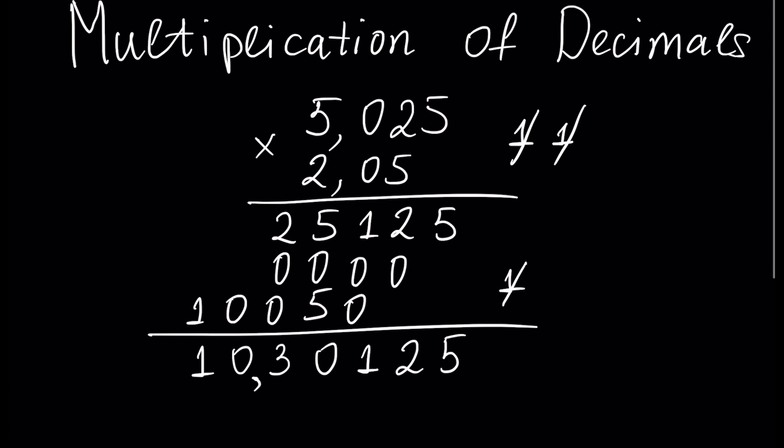First of all, I have to say that if we want to multiply two decimal fractions, we have to multiply the given numbers disregarding the decimal points, and then insert a decimal point in the product using the rule I am going to tell you during the example.